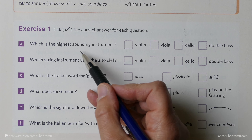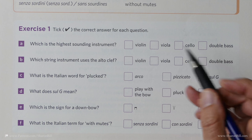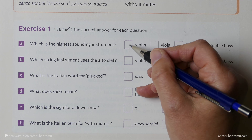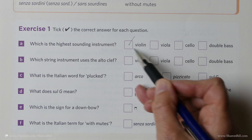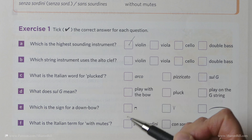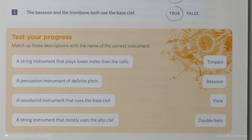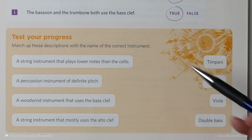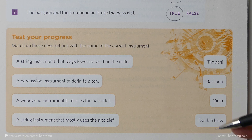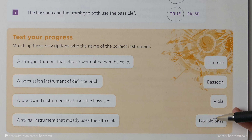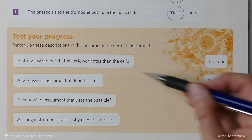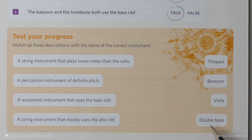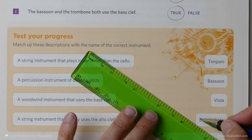Which is the highest sounding instrument? And it is the violin. It's the smallest of the string instruments in size, and that creates the highest pitch. So which string instrument plays lower notes than the cello? And that's the double bass. Do look at a picture of them — look at them in an orchestral setting. You'll see that the double bass is kind of massive compared to the cello, and that will help you to remember it.